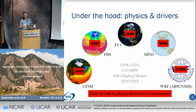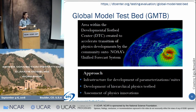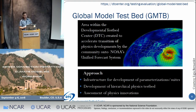That's of course because of the huge number of parameterizations you can combine. So hopefully you agree that if you make an improvement to a physics scheme and you want it to be transferable, that's not the ideal way to go. In this context, the Global Model Testbed GMTB was created as an area in the Developmental Testbed Center DTC, with the goal to accelerate the transition of physics developments by the community onto NOAA's Unified Forecasting System. This talk is purely about the development of an infrastructure that allows exchanging physics.